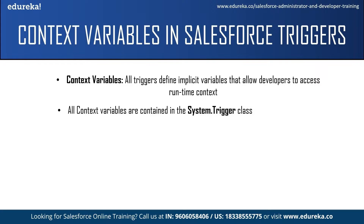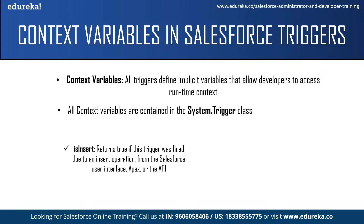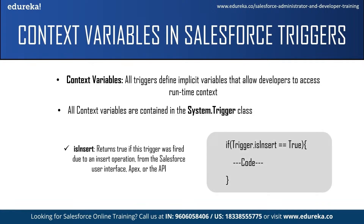Let us look at the list of context variables. The first is isInsert — this returns true if the trigger was fired due to an insert operation via the Salesforce user interface, Apex, or APIs. For example, in code: if (Trigger.isInsert == true), only then will the set of code be executed. It checks for a condition and only executes the code when the condition is true, else it won't be executed.